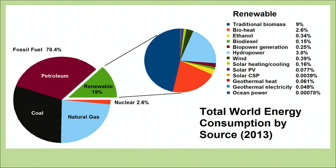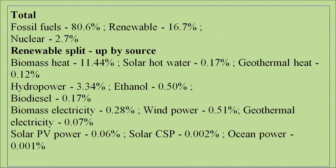Total fossil fuel is 80 percent, whereas renewable is about 11 percent biomass. Solar energy is 0.17 percent and geothermal heat is 0.12 percent. Hydro power is about 3.3 percent, biodiesel is about 0.17 percent, and biomass electricity is only about 0.28 percent. Wind power is about 0.5 percent and geothermal electricity is about 0.07 percent. Solar photovoltaic power is about 0.6 percent and ocean power is about 0.001 percent.